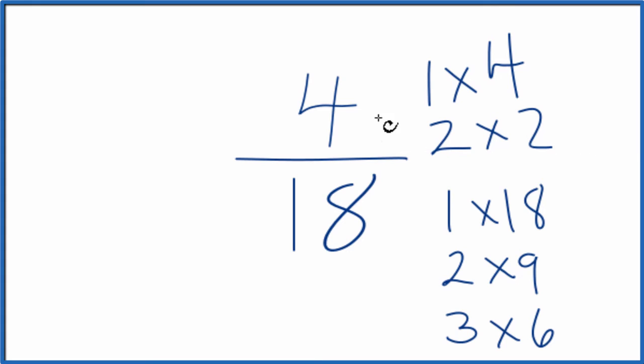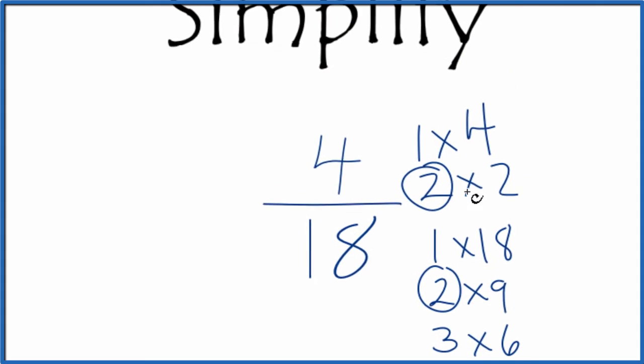So the only factor that goes into both 4 and 18, that's going to be 2. So 2 is our greatest common multiple. Let's move these over here.